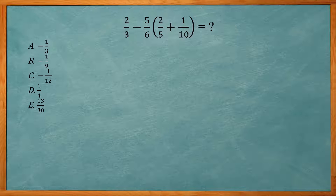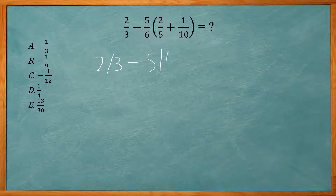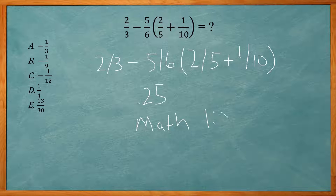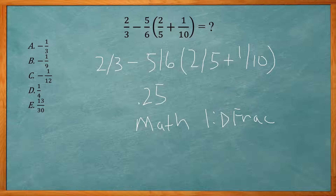This one says 2/3 minus 5/6 times the quantity 2/5 plus 1/10 equals what? So these are all fractions — I can just type this in the calculator. I'm going to put 2 divided by 3, minus 5 divided by 6, open parentheses, 2 divided by 5, plus 1 divided by 10, close parentheses. I get 0.25, which is already 1/4. Otherwise, you can go to Math, select the first choice — Frac — which converts to a fraction. Math, number 1, enter, enter again, and it gives you 1 over 4.